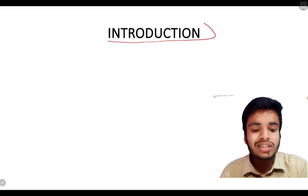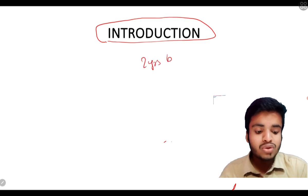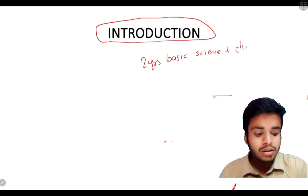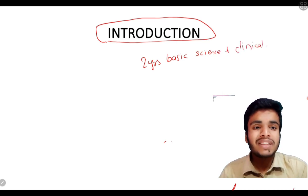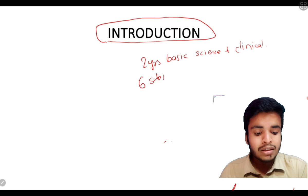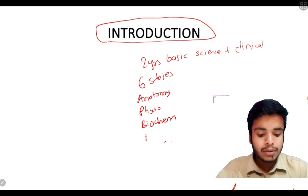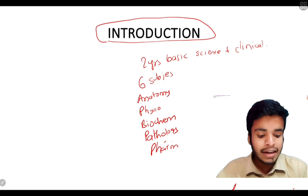So, as an introduction, you will have some subjects in basic science. The first two years of the course cover basic science, and then university-level clinical science follows. The basic science subjects are: Anatomy, Physiology, Biochemistry, Pathology, Pharmacology, and Microbiology.